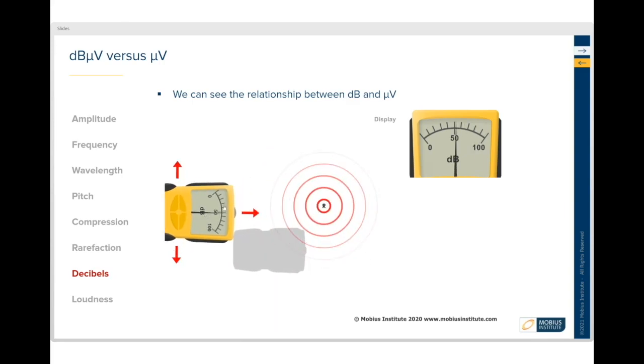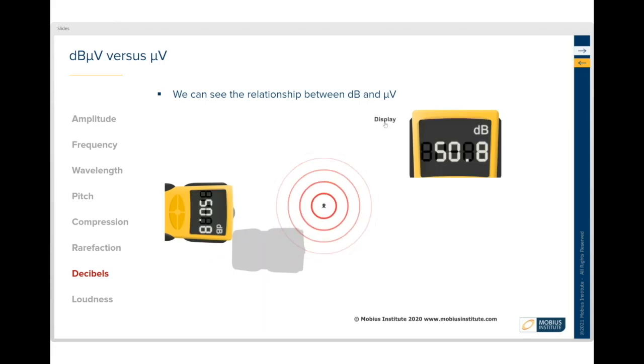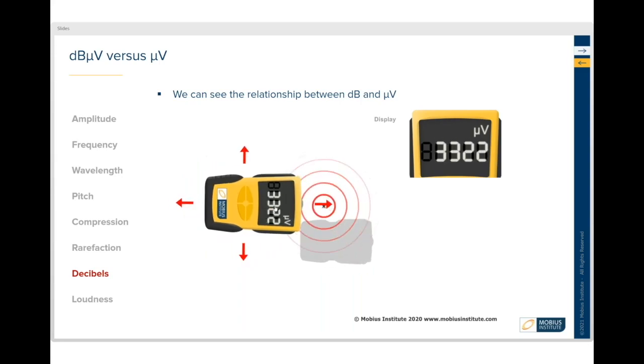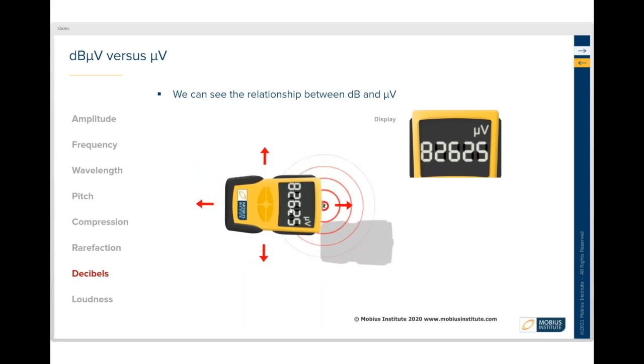But if I change the scale to read in microvolts, you can now see it's going from, well, 348 microvolts. We get closer, and we get closer, and it goes right up to a very large number. So you can see from a microvolt linear scale, the numbers vary greatly. So use a dB scale.